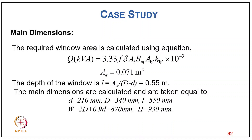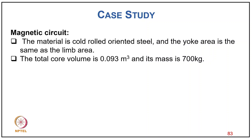Main dimensions: d = 210 mm, D = 340 mm, L = 550 mm, W = 2D + 0.5d = 870 mm, H = 930 mm. Material is cold-rolled oriented steel; yoke area same as limb area. Total core volume 0.093 m³, mass 700 kg. From the 50 Hz characteristic curve of cold-rolled vs. hot-rolled steel laminations (0.35 mm), specific loss at Bm = 1.45 T is 1.5 W/kg. Total core loss with building factor 1.3: Pi = 7 × 1.5 × 1.3 = 1.37 kW.